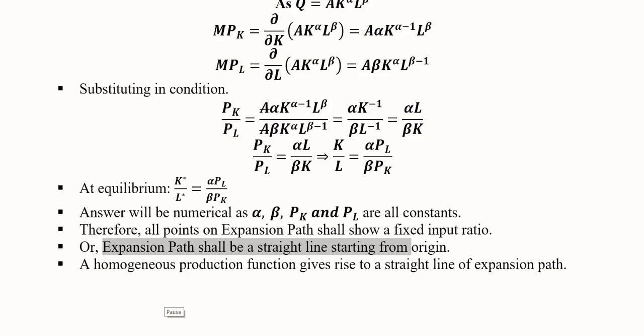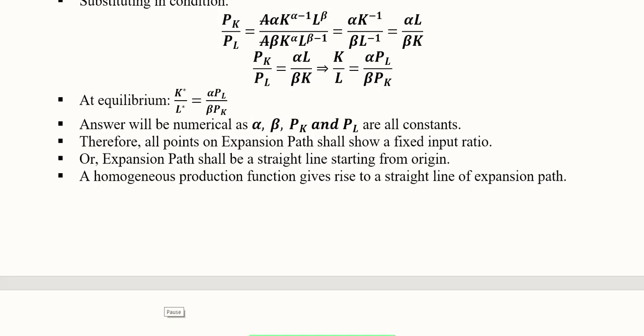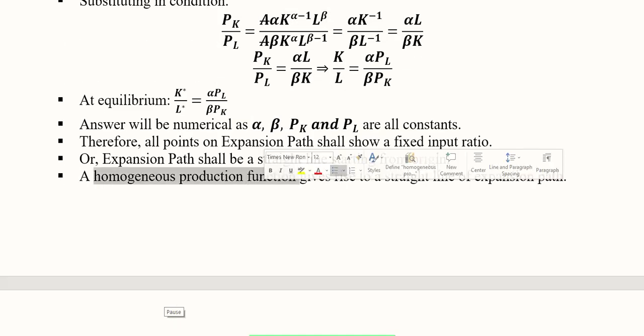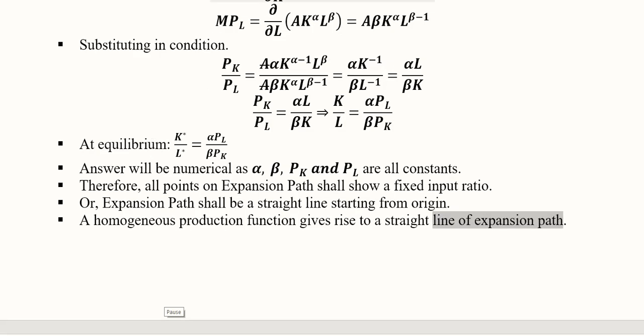Another finding that we can extract from here is that it is the homogeneous production function. As we know that Cobb-Douglas production function is homogeneous, this homogeneous production function is going to give us a straight line expansion path. This is another lesson that we have learned from this.